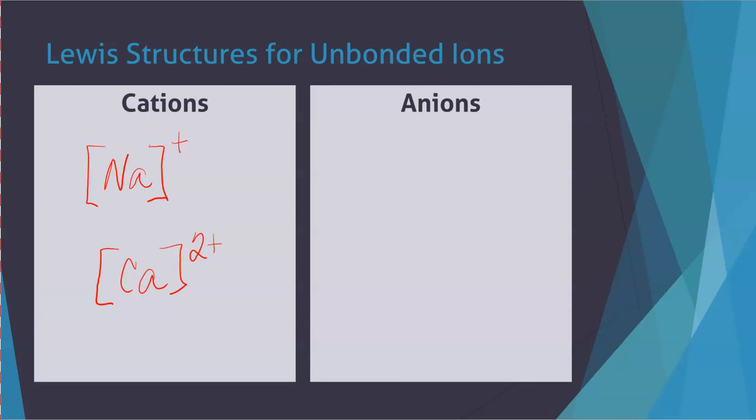Anions have added electrons. And so if I were to draw the Lewis structure for a bromide ion, that's Br, and it has eight valence electrons. It's picked up one of those valence electrons from some other atom. The brackets here really clarify the fact that all of those eight valence electrons belong to the bromine ion.